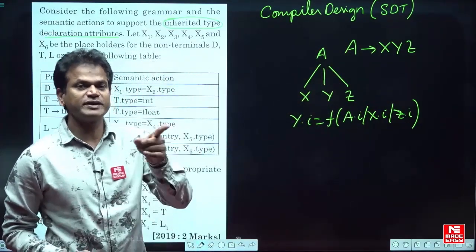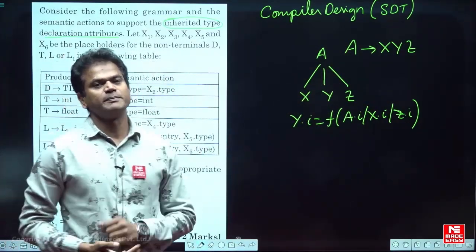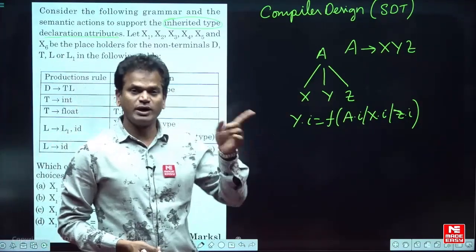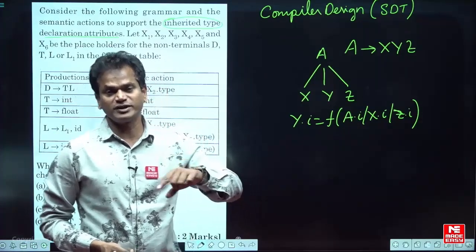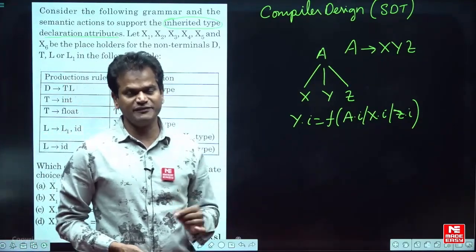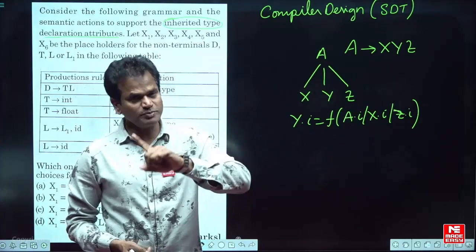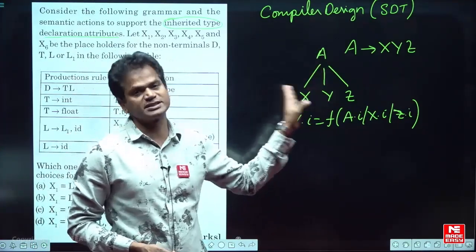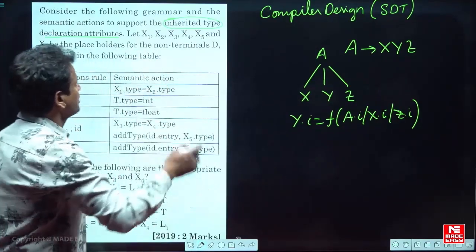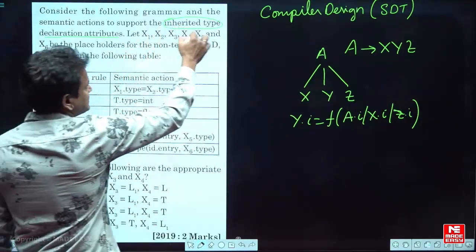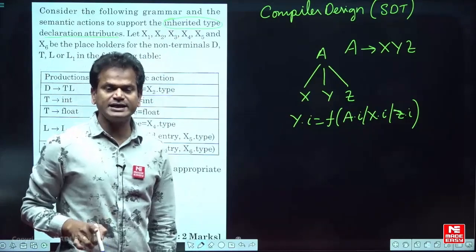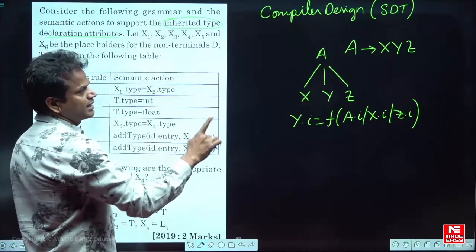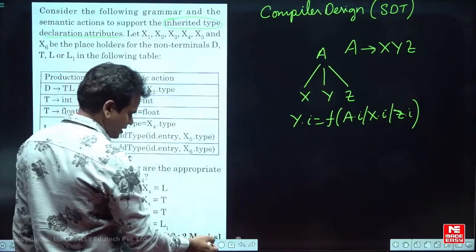If it is a synthesized attribute, we find the parent value. S-attributed means synthesized attribute. L-attributed is different — it uses both synthesized and inherited. For an inherited attribute in L-attributed, you must find the value either from the parent or from the left-side siblings only. But here it is not given as L-attributed; it is given as inherited attribute, meaning we can use any sibling.